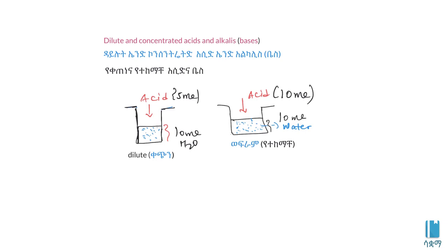In the first beaker, 5 ml of acid is dissolved. In the second beaker, 10 ml of acid is dissolved in a small amount of water. The acid concentration is higher — bizzu — meaning it is more concentrated. 10 ml is less dilute.